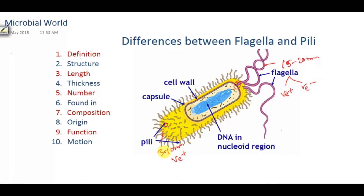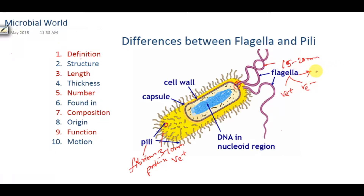If we consider their composition, pili is composed of pilin protein — a fibrous protein. On the other hand, flagella is composed of flagellin protein, and it is also composed of another protein called globular protein.